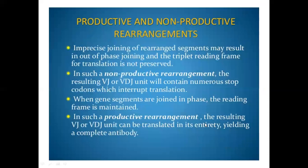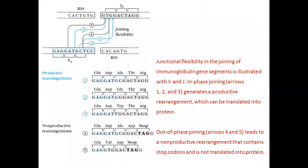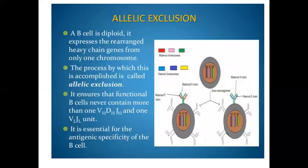This is known as the productive and non-productive rearrangements of the immunoglobulin genes. Next, allelic exclusion. Here, a B cell, like any other somatic cell, expresses the rearranged heavy chain genes from only one chromosome.